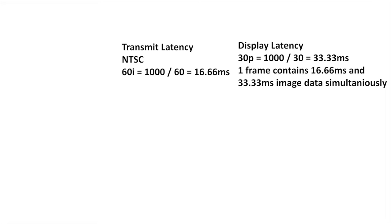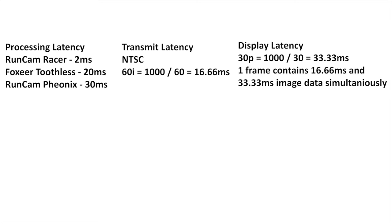That's completely ignoring the processing time of the camera. Looking at Drone Mesh results, depending on the camera you use: a racing camera like a Runcam Racer 2 processes images at around 2 milliseconds. If you're running more of a freestyle camera like a Foxeer Toothless or a Runcam Phoenix, the Toothless was around 20 milliseconds and the Runcam Phoenix around 30 milliseconds. You have to add that time on before the transmission latency, which is determined by the frames per second being sent.